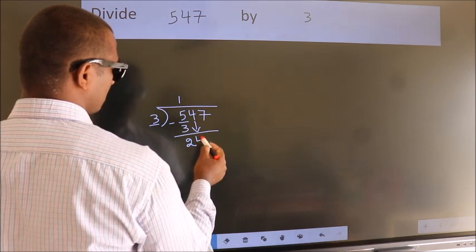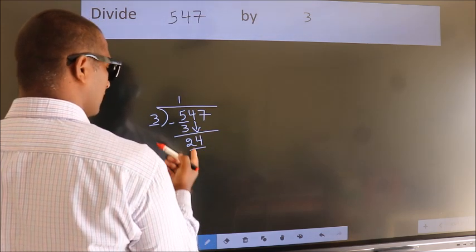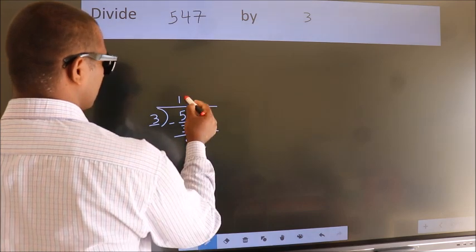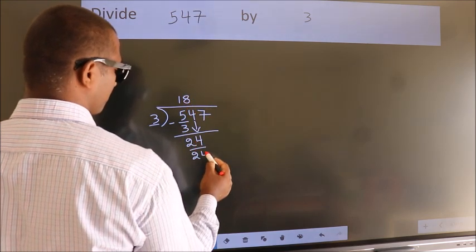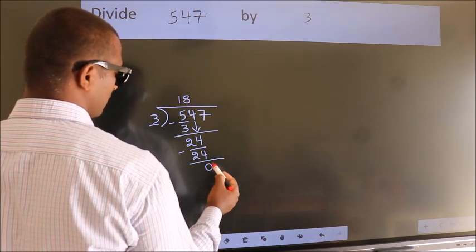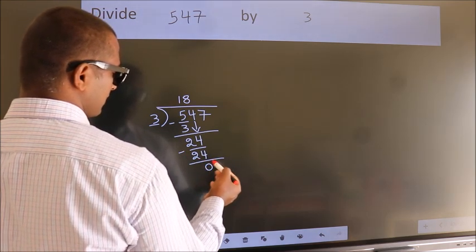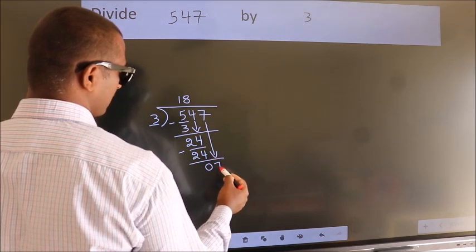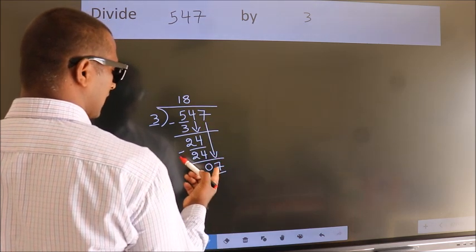When do we get 24 in three table? 3 eights 24. Now we subtract, we get zero. After this, bring down the beside number, so 7 down. So 7, a number close to 7 in three table is 3 twos 6.